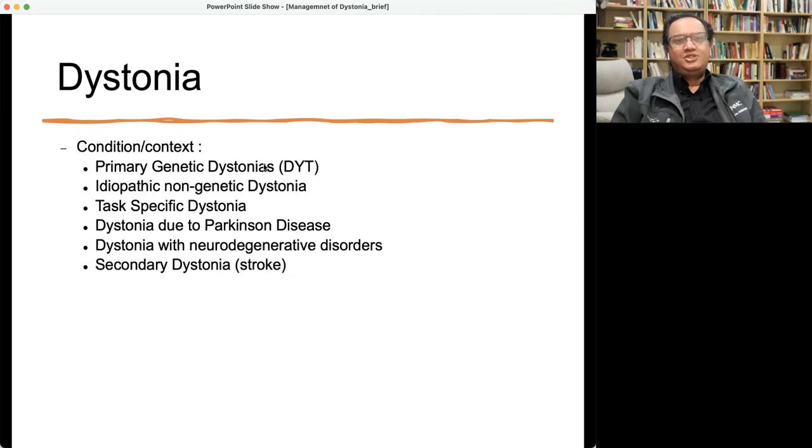In primary genetic dystonias, usually chemodenervation is not done because it's really generalized, but in idiopathic non-genetic focal dystonias or task-based dystonia, this will be a choice because medication may not work. In dystonia due to Parkinson's disease, they get worse with levodopa or do not respond. Again, chemodenervation with botulinum toxin will be a treatment of choice.